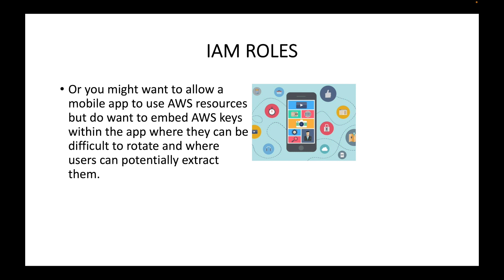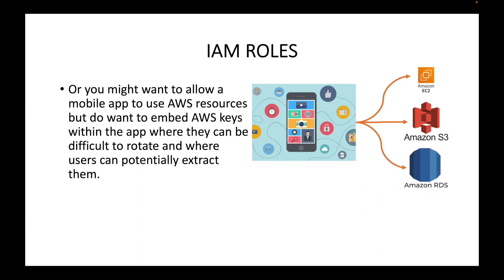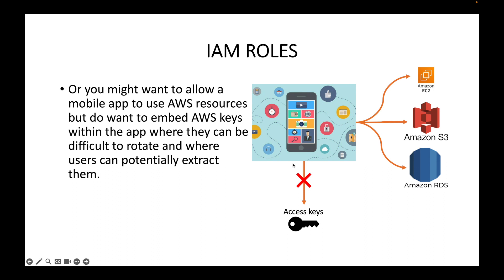Or you might want to allow a mobile app to use your AWS resources — maybe EC2 instances, S3 bucket, or your database. We can utilize IAM roles here as well. Instead of embedding access keys inside the mobile app, we can leverage IAM roles to provide the necessary access to AWS services, which avoids credentials that can be difficult to rotate or potentially extracted by users.